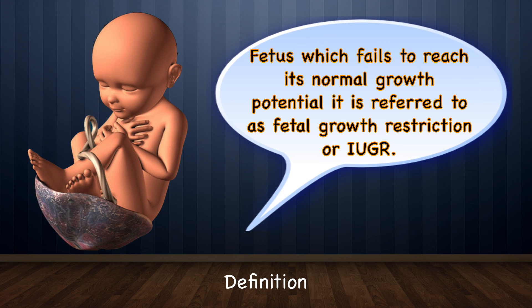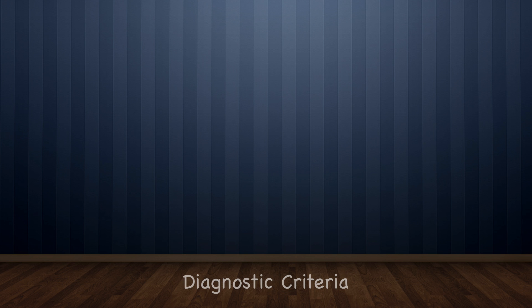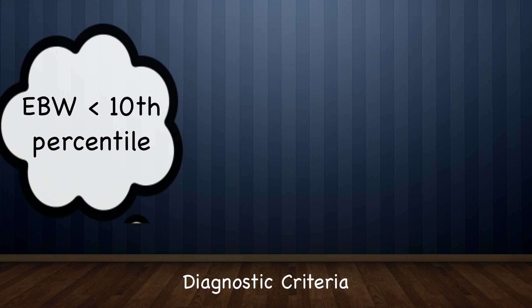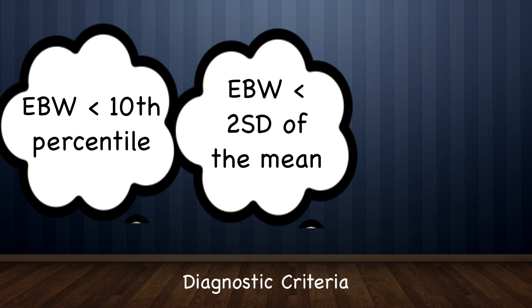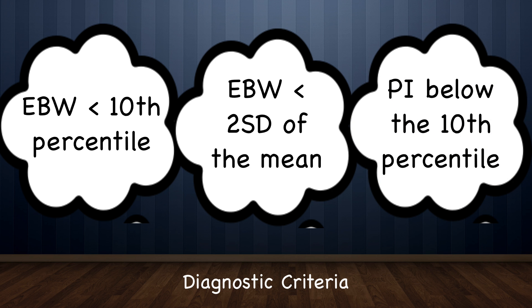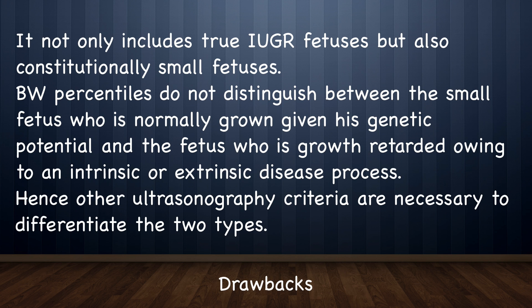How do you define IUGR? When the fetus fails to reach its growth potential, it is referred to as fetal growth restriction or intrauterine growth restriction. In practice, specific ultrasonographic criteria are used to diagnose an IUGR fetus: estimated birth weight below the 10th percentile for that accurately dated gestational age, or estimated birth weight less than two standard deviations from the mean. This definition has one fallacy — it not only includes true IUGR fetuses but also constitutionally small fetuses. Hence, other ultrasonographic criteria are necessary to differentiate the two types.